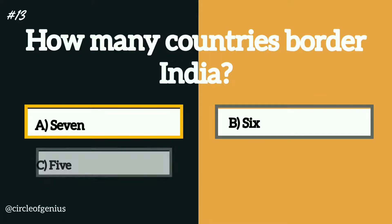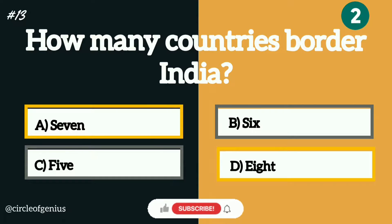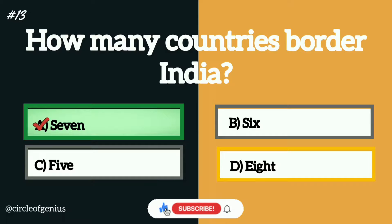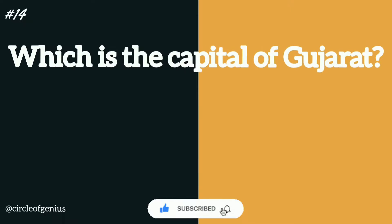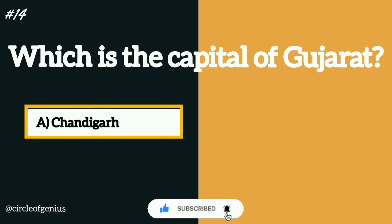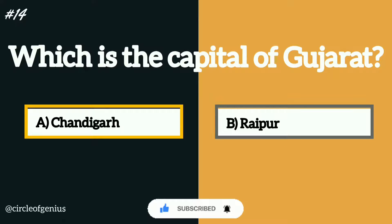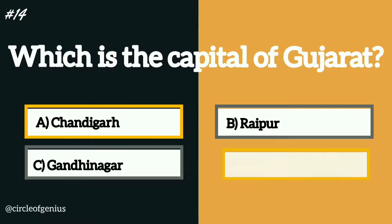The correct answer is option A, 7. Question number fourteen: which is the capital of Gujarat? Option A: Chandigarh, B: Raipur, C: Gandhinagar, D: Thiruvananthapuram.